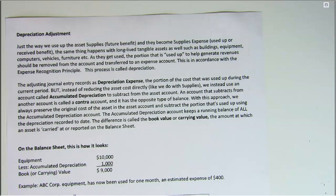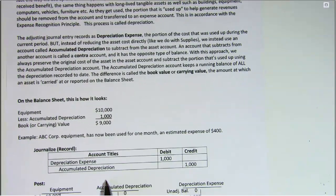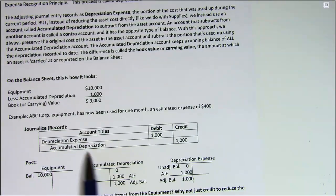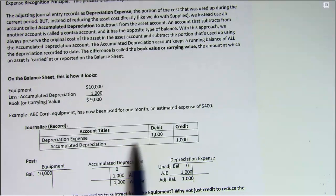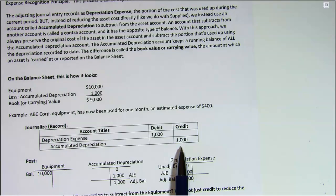The difference between the cost and the accumulated depreciation is called our book value or carrying value. Here's an example of what our journal entry looks like: we debit the depreciation expense account and credit the accumulated depreciation account for our estimate of how much that asset has been used up.